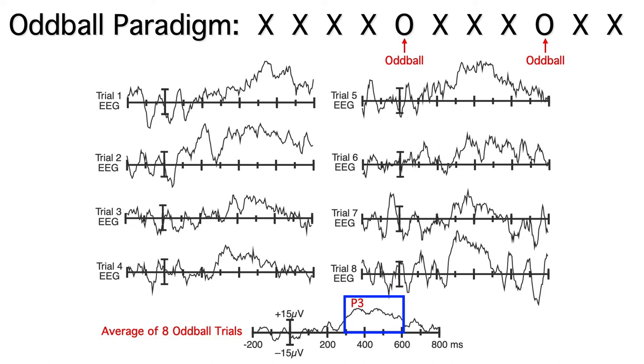In this particular example, the P3 is huge, about 25 microvolts. It's way bigger than the noise in the pre-stimulus interval. But this is an unusual situation.